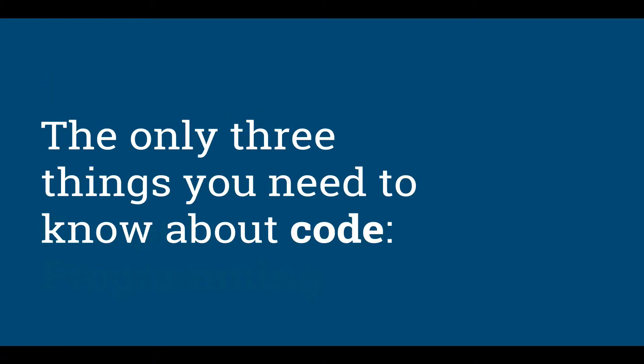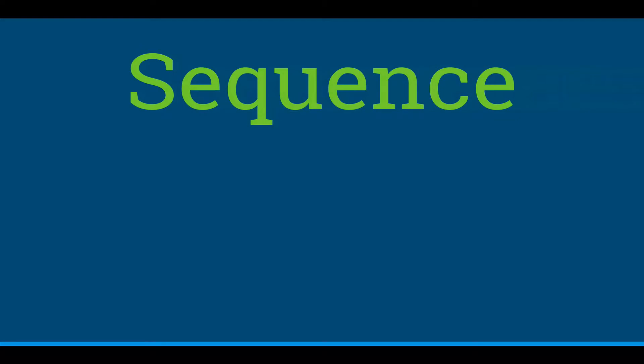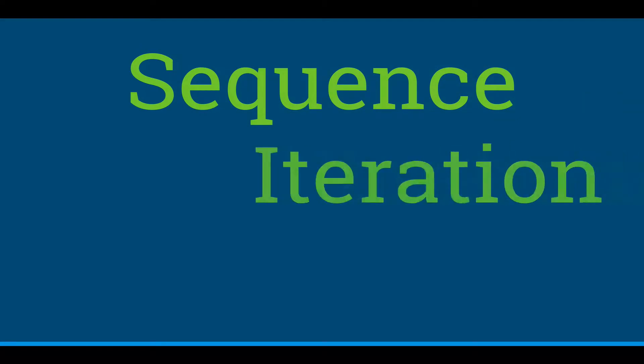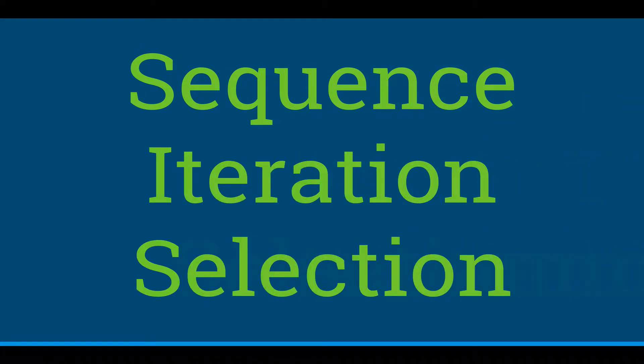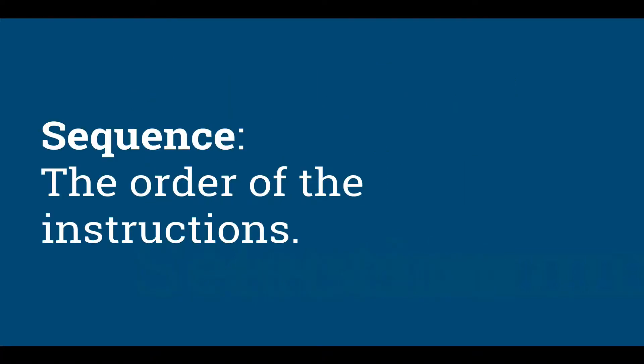Really, you just need to know three things. Obviously there's more to it than three things, but the three most basic elements of coding are: sequence, iteration, and selection. Those three things — you can master those concepts. Those are the building blocks of code.